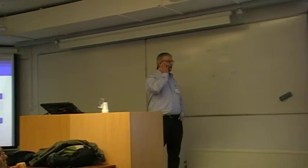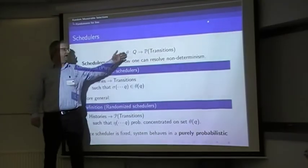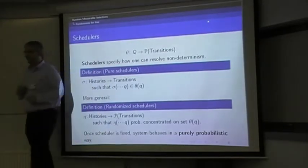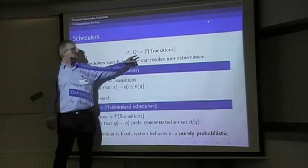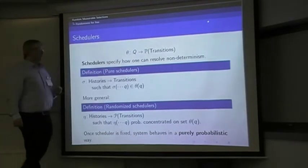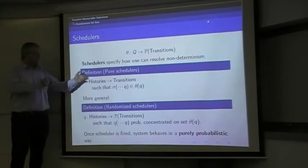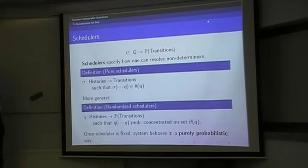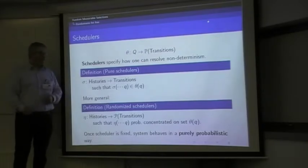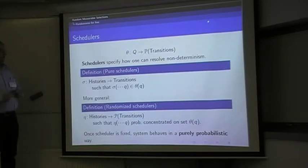Our main problem has to do with schedulers. Let me remind you that theta is of this type. It's a map from states to sets of transitions, whatever they are. Schedulers specify how you resolve non-determinism, that is, how you choose one transition from this set. You have two kinds of schedulers. There's the obvious kind, which is not the right one usually, called pure schedulers. A pure scheduler takes the whole history of computation. You have all sorts of variants where you only take the last state, which would be called memoryless schedulers.